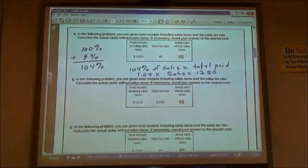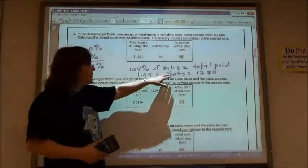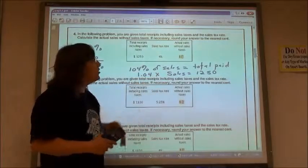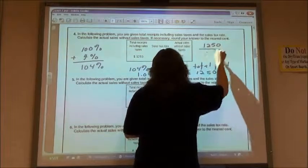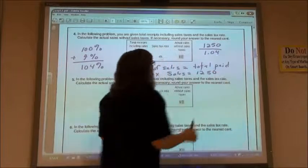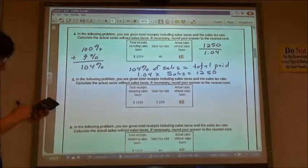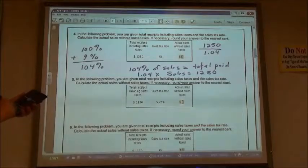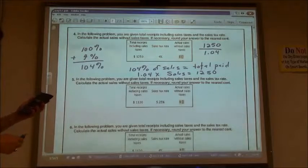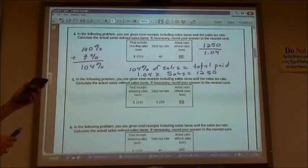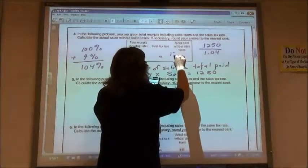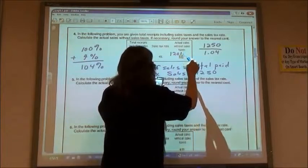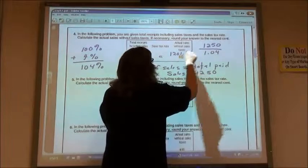So again, like on those other problems, I want to get the sales by itself, I'm going to end up having to divide. I'm going to take the $1,250, I'm going to divide it by 1.04. So 1,250 divided by 1.04 gives me, if I round this off, $1,201 and 92 cents.